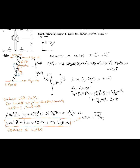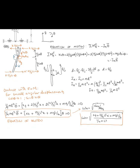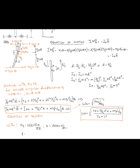Substituting all the given values — k_t = 1000 N·m/rad, k = 2000 N/m, L = 5 m, and M = 10 kg — into the expression for natural frequency.